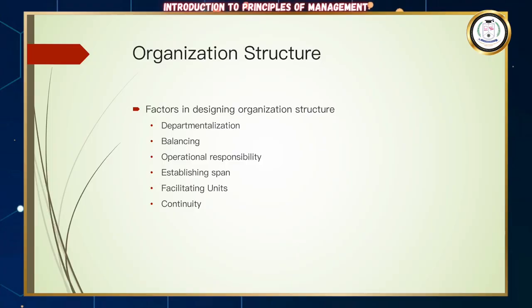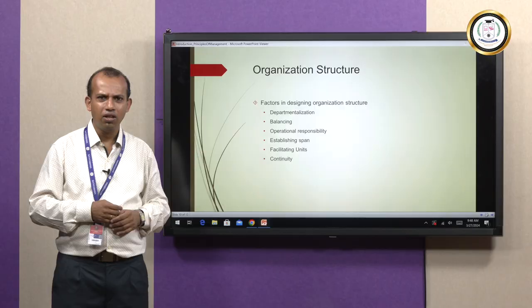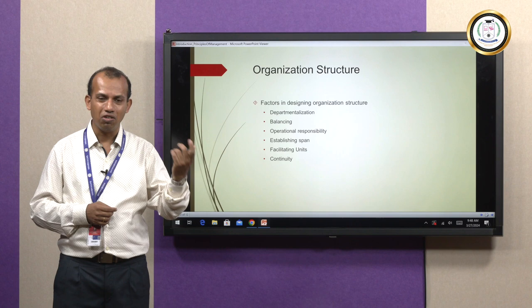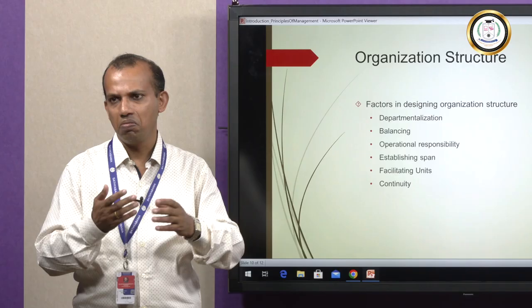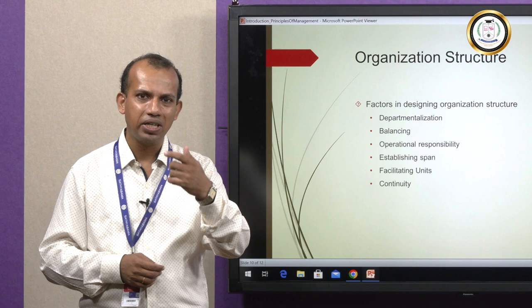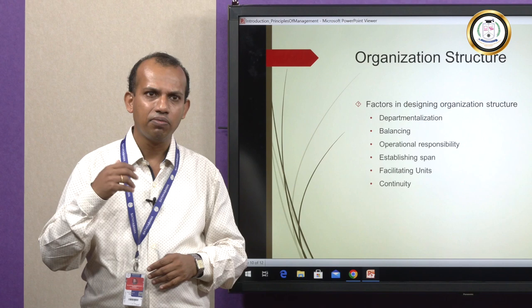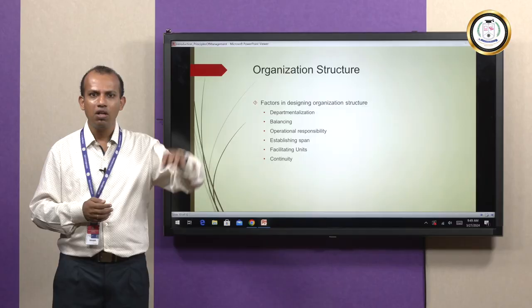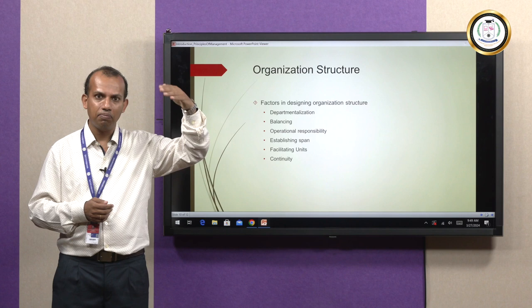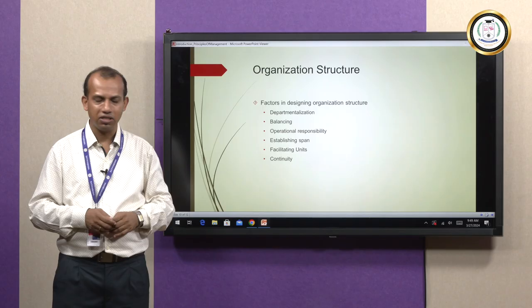Establishing span refers to the number of employees a manager can oversee — there is no fixed number, as it varies based on many factors. A startup may have a lean structure with fewer managerial levels, while a traditional large company may have multiple managerial levels, depending on the industry, organization, and its culture.